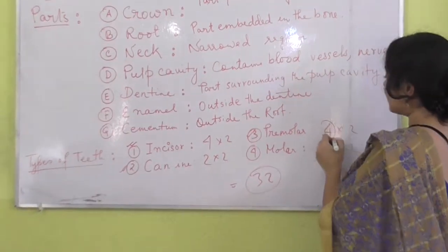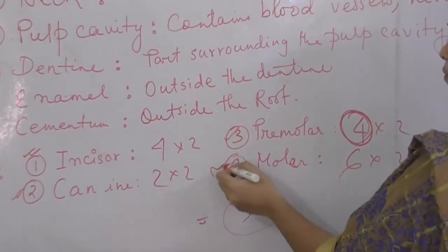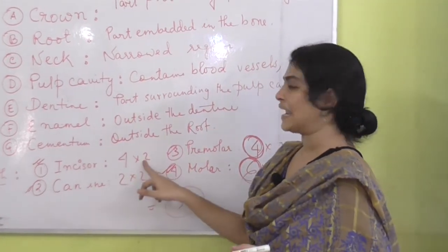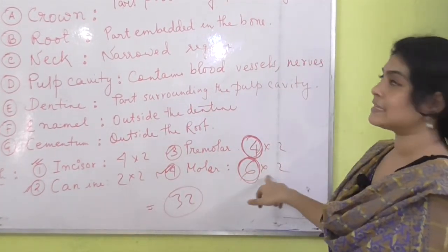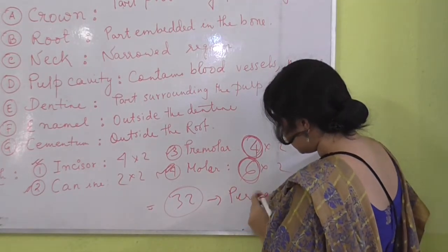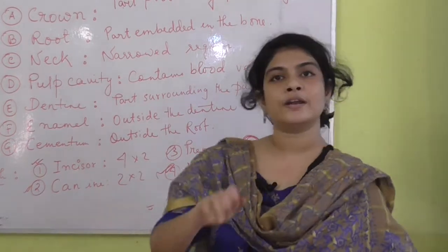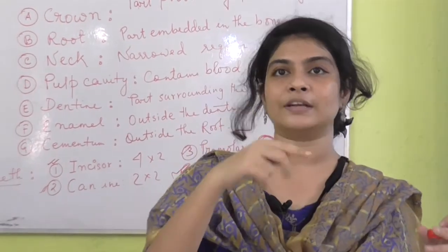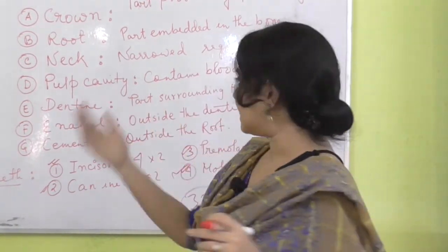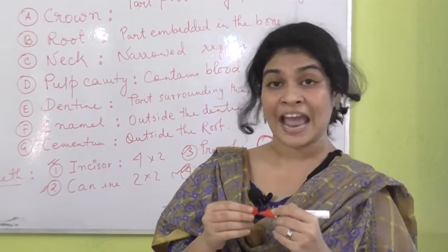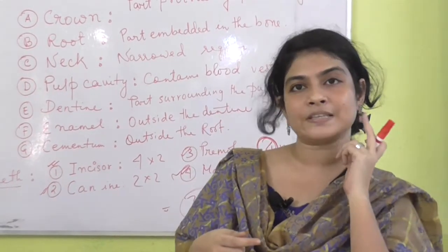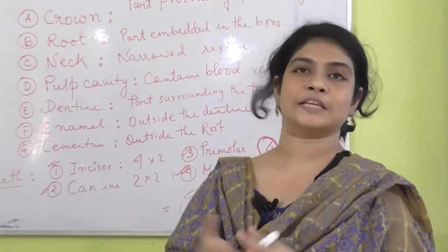Next we have the premolars, which are four in each jaw, and then we have the molars, which are six in each jaw. Adding them all up across two jaws: four incisors times two is eight, two canines times two is four, four premolars times two is eight, and six molars times two is twelve — giving us a total of thirty-two permanent teeth. We also know there are two sets of teeth: milk teeth, which fall out after a certain age, and permanent teeth. The last molar is the wisdom tooth, which appears at a later stage of life.